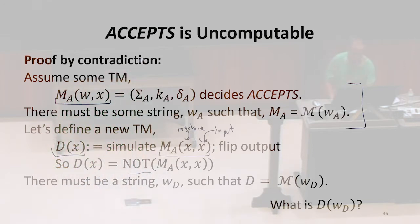This is really just negating the machine. Now using the same input. All the machines are described by some string. So there must be some string we'll call WD, such that it describes this D machine.